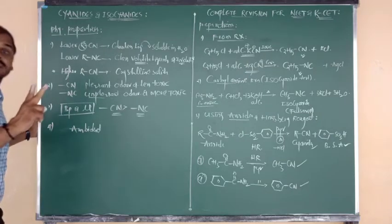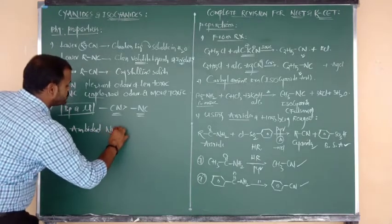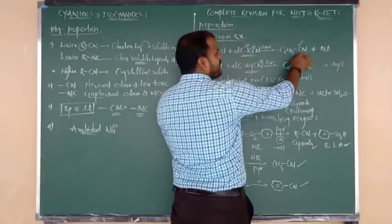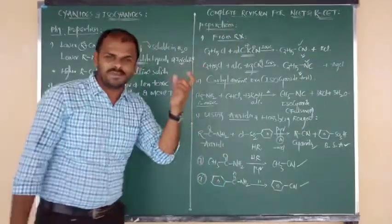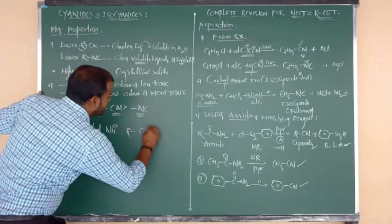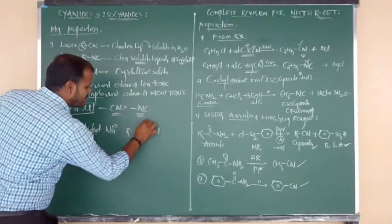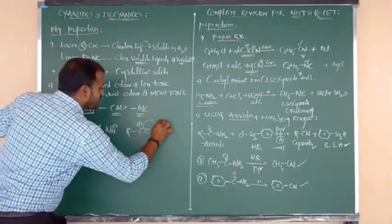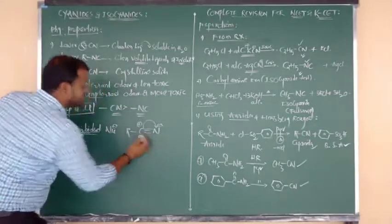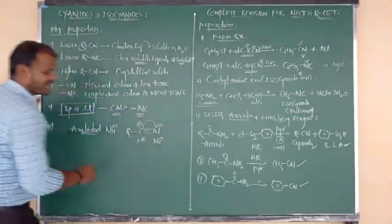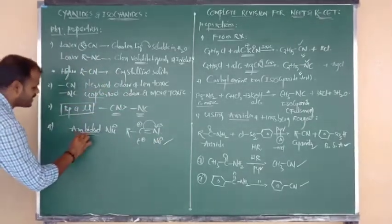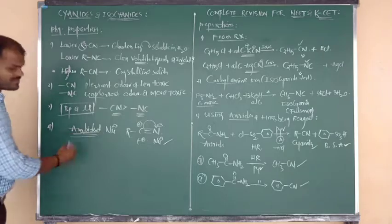In alkyl cyanides (R-C≡N), one of the pi bonds is unstable and undergoes delocalization: carbon becomes slightly positive, nitrogen becomes slightly negative (due to higher electronegativity). So in cyanides, carbon acts as an electrophilic center and nitrogen acts as a nucleophilic center — meaning cyanide can act as both electrophile and nucleophile. This dual nature is called ambident nature.